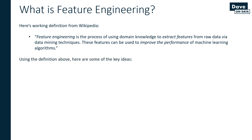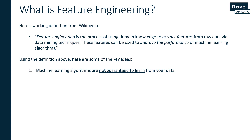Using this definition, here are some key ideas to keep in mind when thinking about what feature engineering is, why you do it, and what the ramifications are. First, machine learning algorithms are not guaranteed to learn from your data. You can pull data from a data warehouse, an Excel spreadsheet, or an API — just because you have it in a particular format does not mean that machine learning algorithms are going to learn anything from the data. The data could be plain wrong, or it might not be in a format useful to the algorithm.